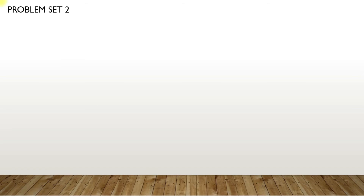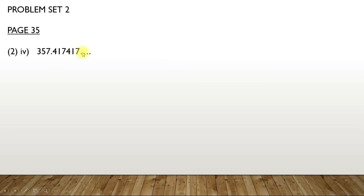We have completed Practice Set 2.1 — one sum, the third, is for homework. Now I am taking a similar sum from Problem Set 2, page 35, question number 4. You have to convert it into P upon Q form. The first step: how many numbers are recurring? You can see 417, 417 — three numbers are recurring. So multiply by 1,000. Let x equal to 357.417 recurring, with a bar to show it is recurring.